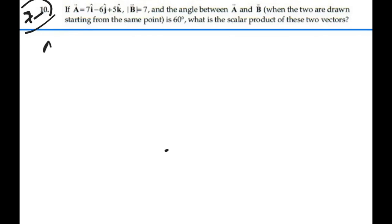Now, scalar product, at least in one form, A dot B is equal to the magnitude of A times the magnitude of B times the cosine of the angle between them, or we could write this as A times B cosine theta.